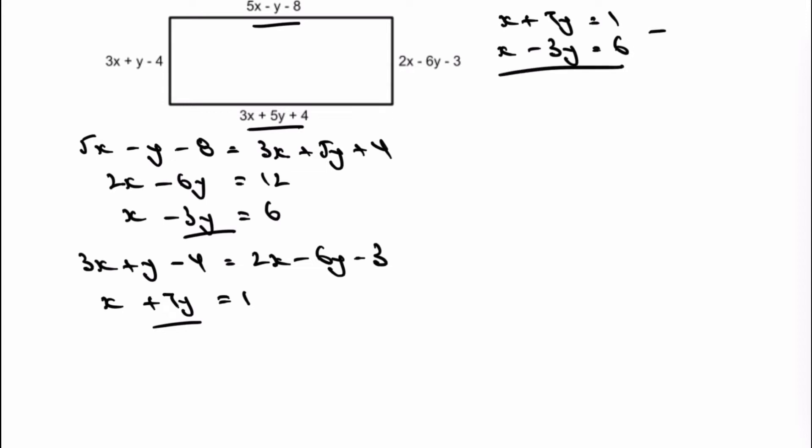Now, if I subtract one from the other, it means I lose the x's. However, I've just got to be a little bit careful because I've got positive 7y minus negative 3y. So that's actually two negatives together are going to make a positive. So that's going to give me 10y equals minus 5.